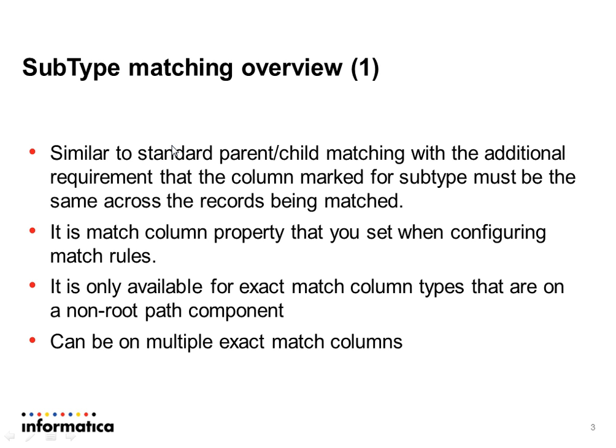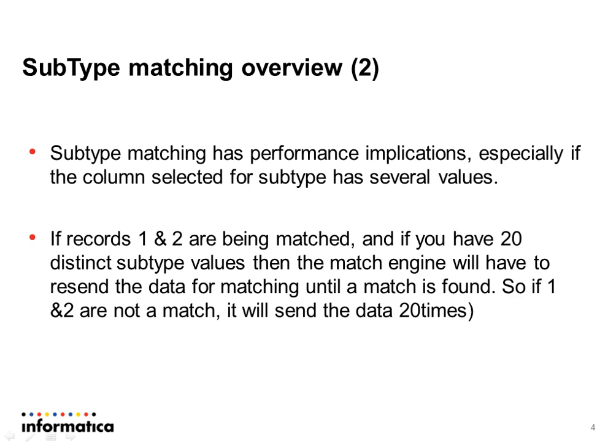We will also look into some examples to compare the results of matching with and without subtype. Subtype matching is similar to standard parent-child matching, with the additional requirement that the columns marked for subtype must be the same across the records being matched. Subtype is a match column property that you can set when configuring match rules, and it is only available for exact match column types on a non-root path component.